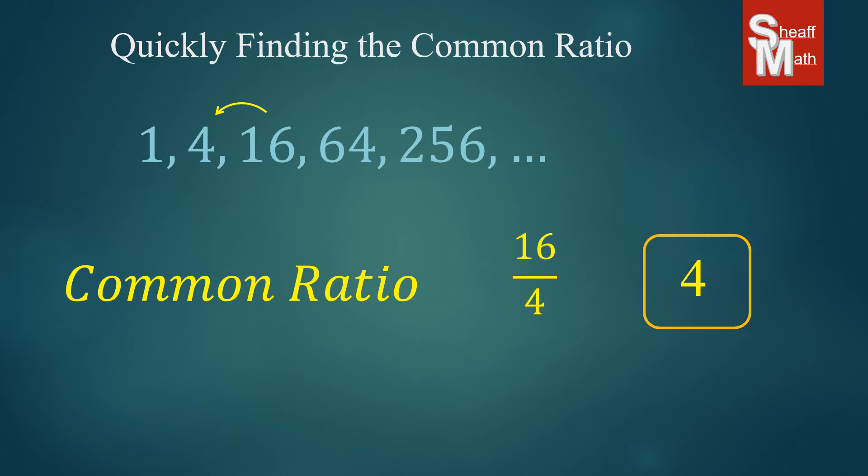If you had to prove that it was a geometric sequence, then you would have to do all of them to see if they all equaled 4. But just to find a common ratio quickly, all you do is pick any number, divide it by the one before it. And you always want to maybe pick the easiest ones.